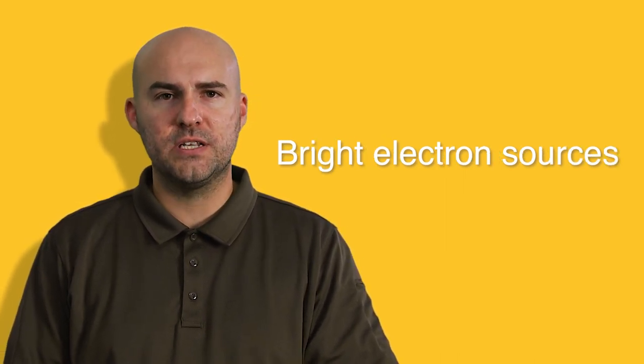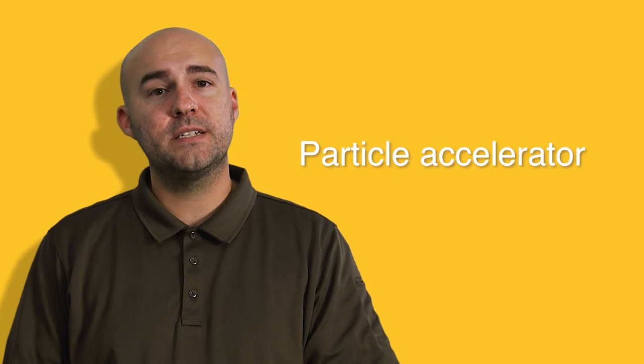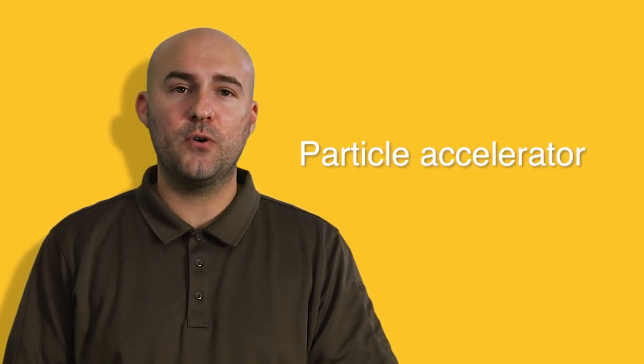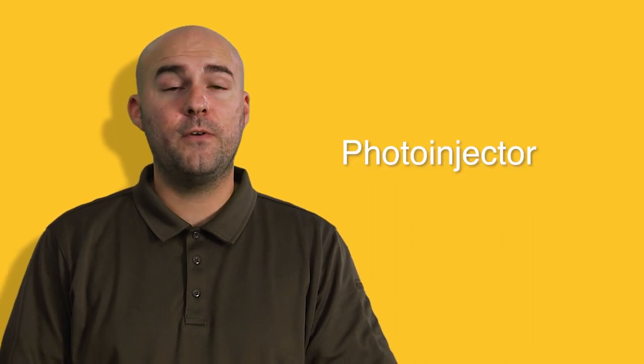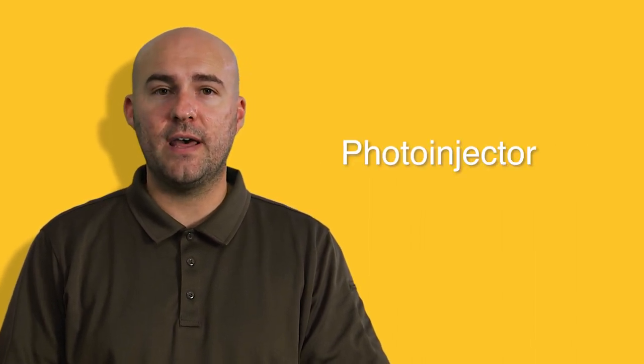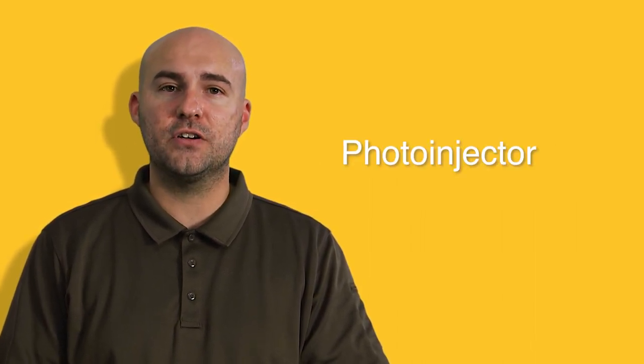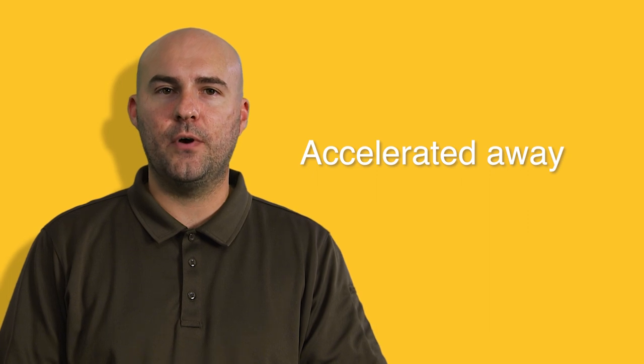But what are bright electron sources anyway? They are a type of particle accelerator that uses the photoemission process to generate electron beams from a photoinjector. A photoinjector is simply a chamber that holds the photocathode and has a high electric field. When the electrons are emitted from the photocathode into this high electric field, they are accelerated away from the photoinjector.